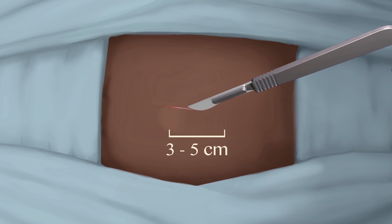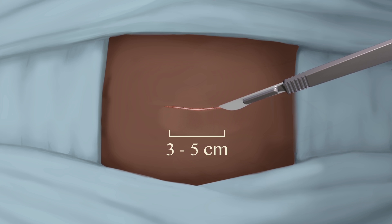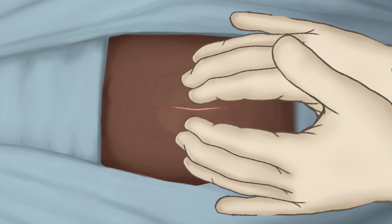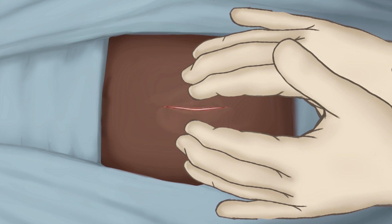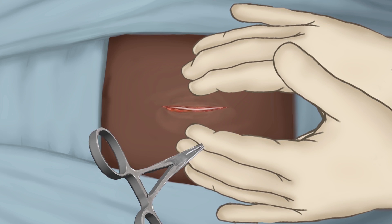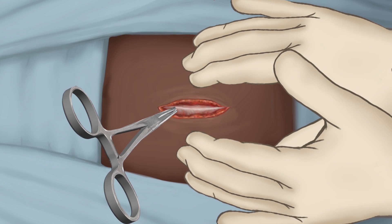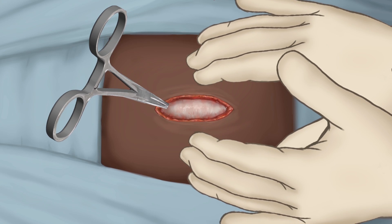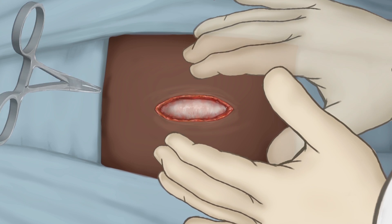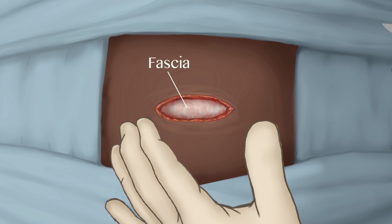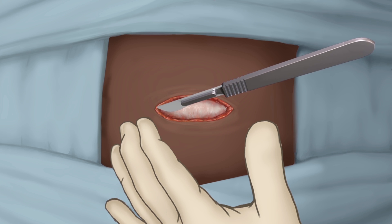Make a transverse skin incision with the scalpel approximately 3 to 5 cm and bluntly dissect the subcutaneous tissue. Incise the fascia transversely.